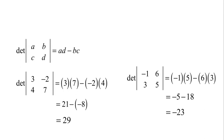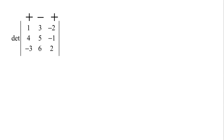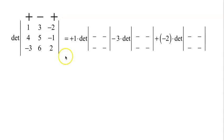Now 2 by 2 matrices are relatively easy. 3 by 3 matrices are considerably more challenging. What we need to do is put a plus-minus-plus across the top. So it's plus 1 times some 2 by 2 matrix, minus 3 times some 2 by 2 matrix, plus negative 2 times some 2 by 2 matrix. These matrices are called the minors.